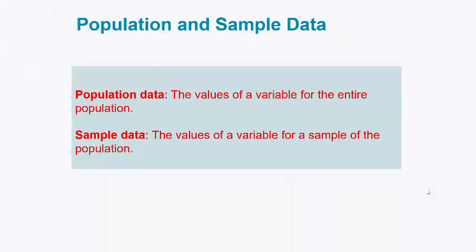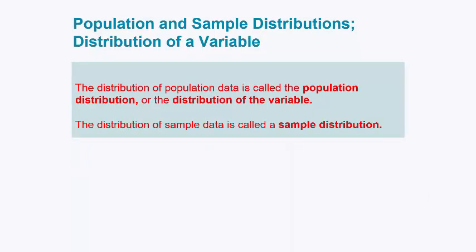Now I want to talk about population and sample data — what's the difference, and what do we use sample data for? Population data is the values of a variable from an entire population, and sample data is the value of a variable for a sample of a population. The distribution of population data is called the population distribution or the distribution of the variable, and the distribution of sample data is called the sample distribution.